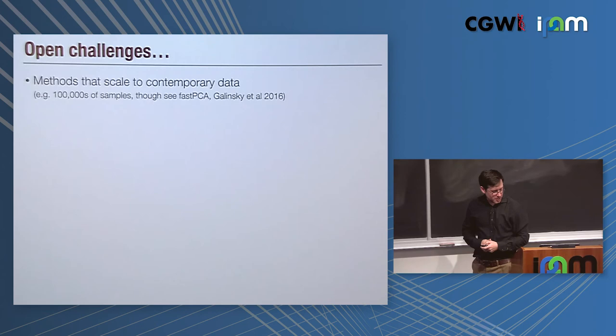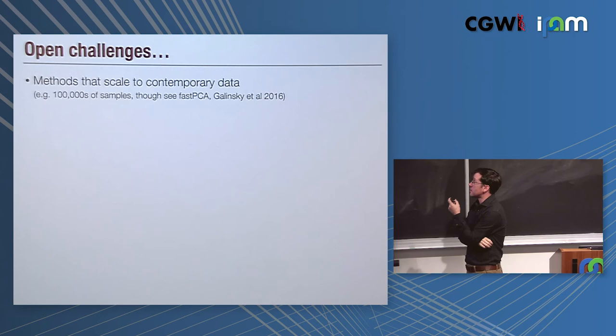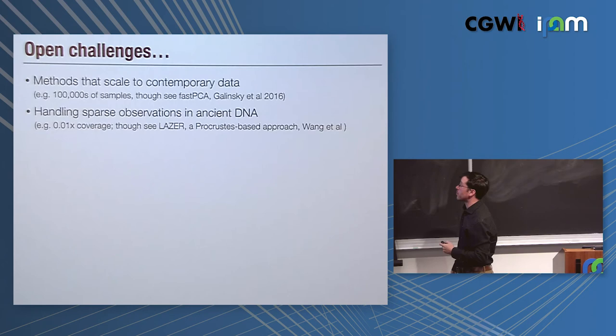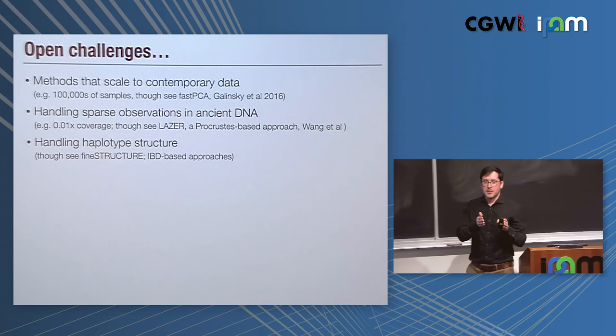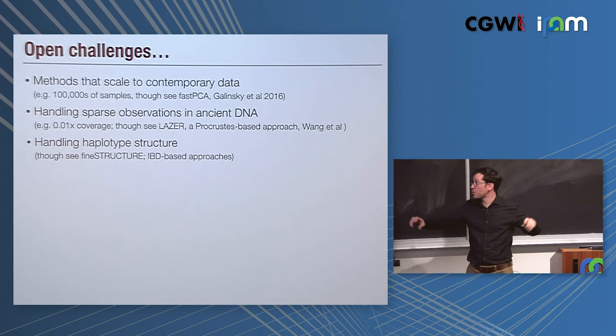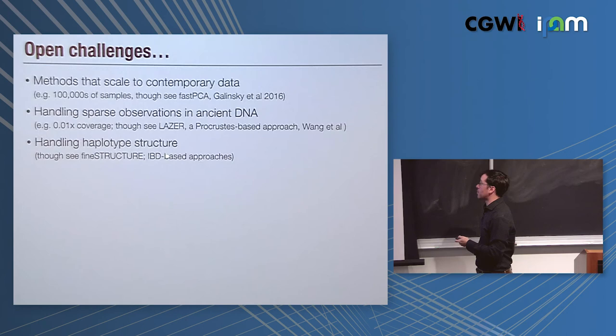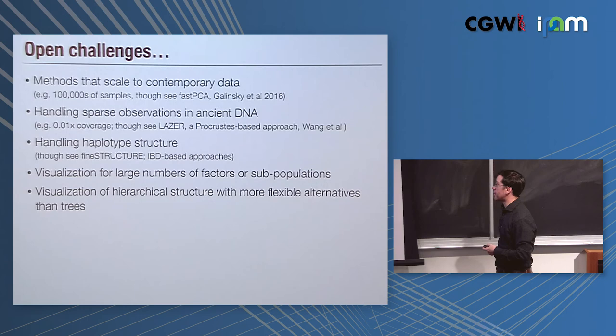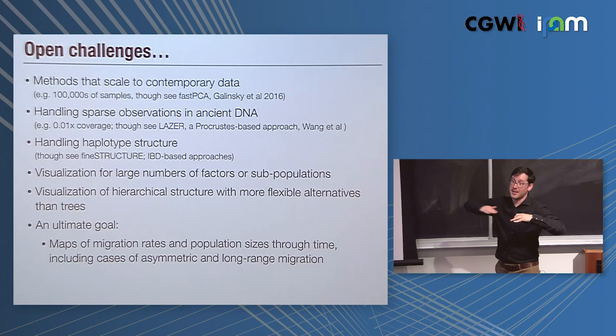I'll just go to open challenges. Methods that scale to contemporary data in population structure, that's a major issue, so getting to hundreds of thousands of samples is a big challenge, though there's continual innovation, so fast PCA is one approach that can now do PCA at very large scale. A big challenge is handling sparse observations in ancient DNA data where you have really patchy observations of genotypes. How do you fit those individuals into PCA type approaches nicely? So there's different approaches being taken there. All the approaches I've been talking about are treating genotypes independently. How do you leverage the haplotype structure that we were introduced so well in the first day? So there's some approaches using this approach called fineSTRUCTURE and using identity by descent.